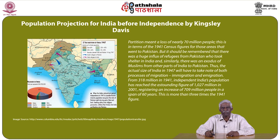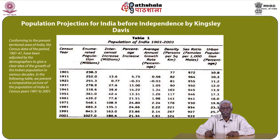Taking out the areas that went to the newly created state of Pakistan, the revised total for India was 318 million in 1941, meaning partition represented a loss of nearly 70 million people in terms of 1941 census figures for those areas. However, there was a huge influx of refugees from Pakistan who took shelter in India, and similarly an exodus of Muslims from other parts of India to Pakistan. Thus, the actual size of India's population in 1947 must take note of both immigration and emigration. The data from 1941 and subsequent census years clearly show the growth in population size as depicted in Table 1 of population of India between 1901 and 2011.